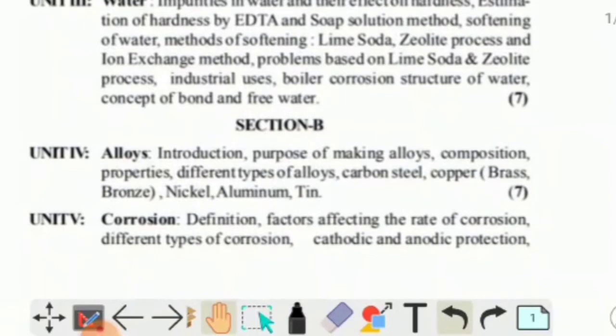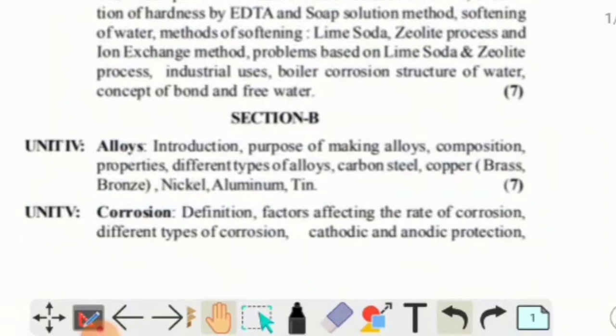Section B, Unit 4 covers Alloys: introduction, purpose of making alloys, composition, properties, different types of alloys including carbon steel, copper, brass, bronze, nickel, aluminum, and tin.